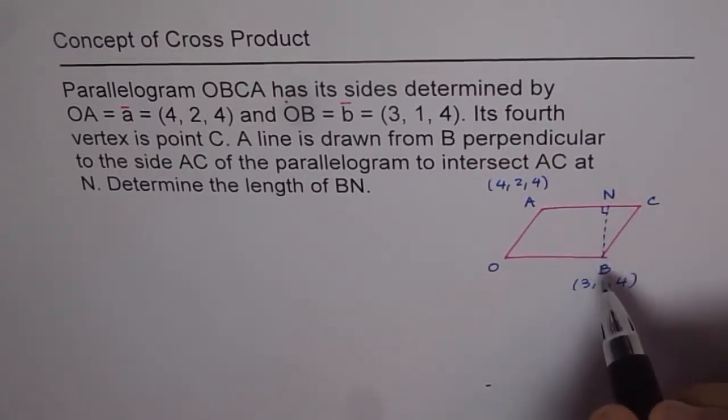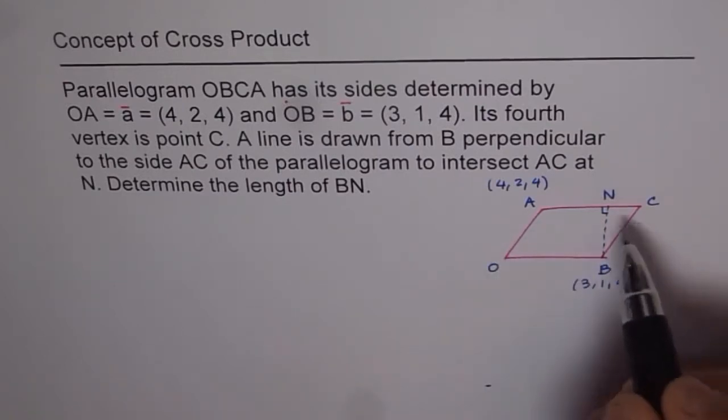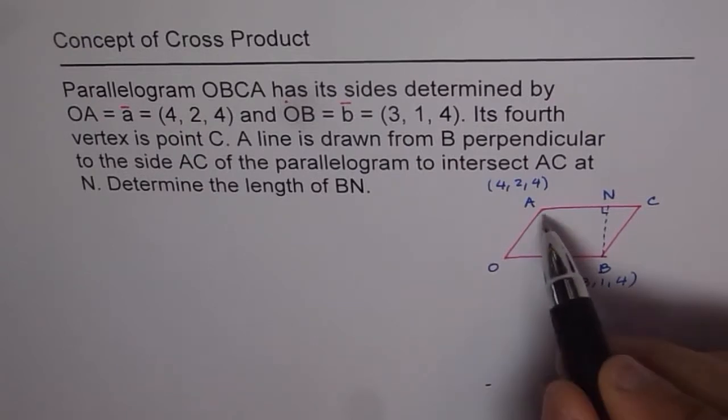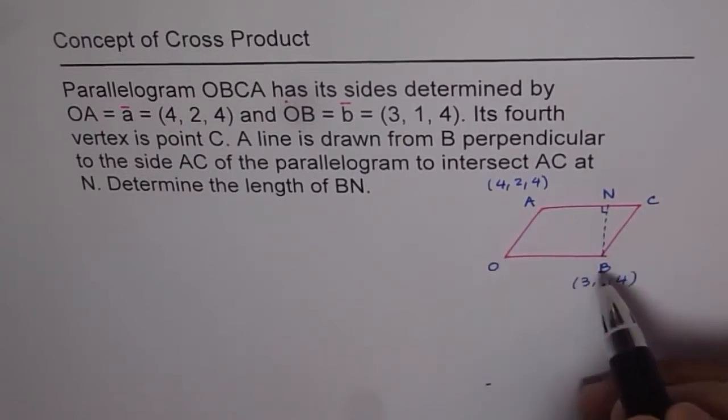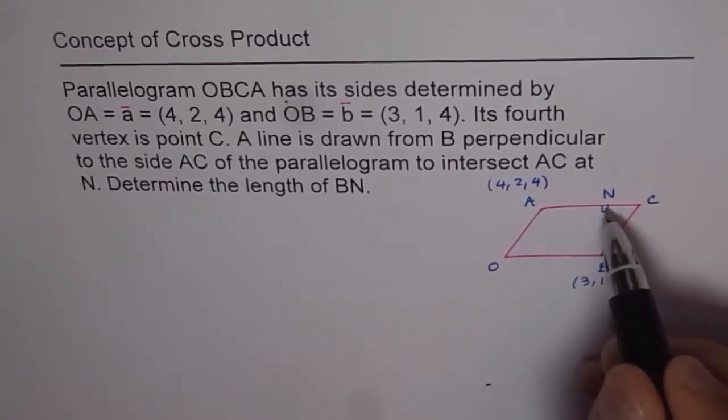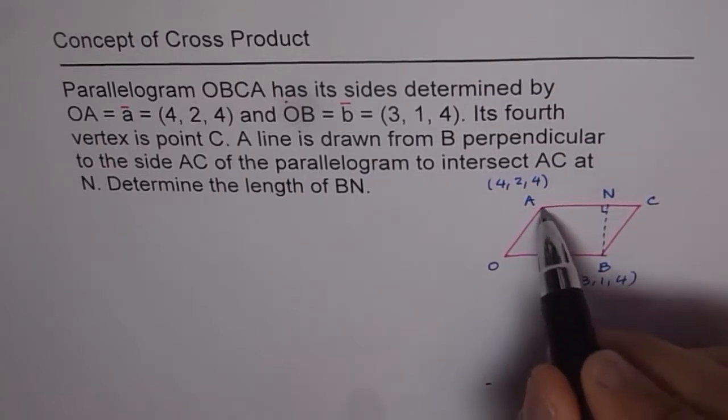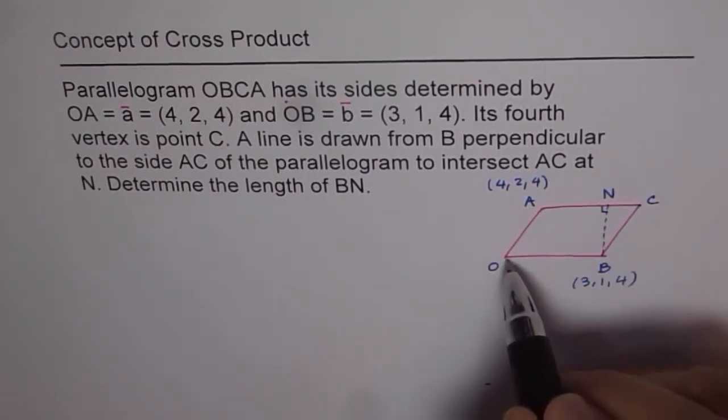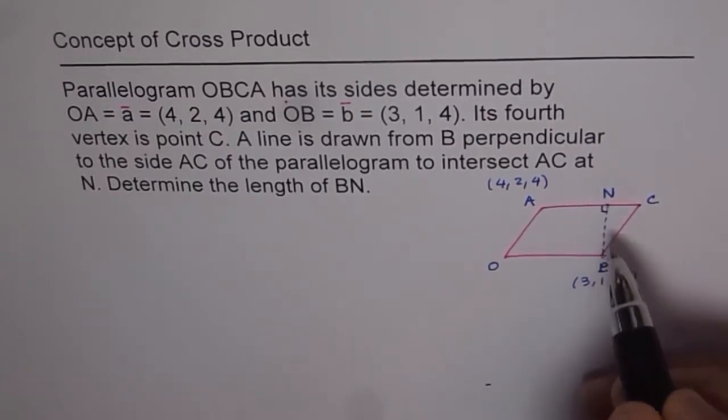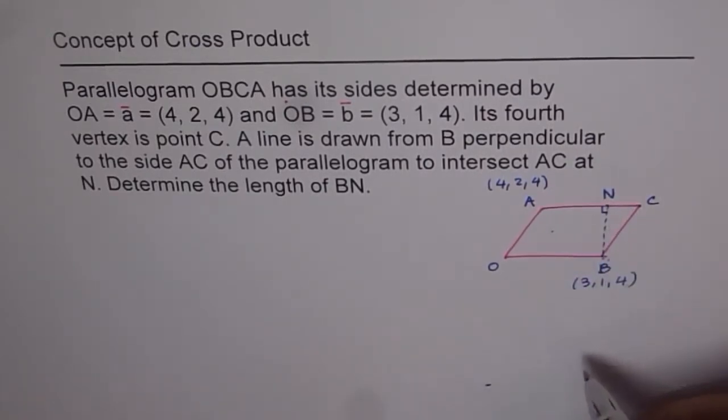Now, to start with, what we can relate this to is if you find the area of parallelogram with the help of cross-product of OA and OB, then we can equate that to the area of parallelogram which we can also find by base times height. Now base is known to us, which is equal to OB, and height is BN, which is not known, but area is known. So we can find BN. That is the strategy which we are going to use to solve this problem.